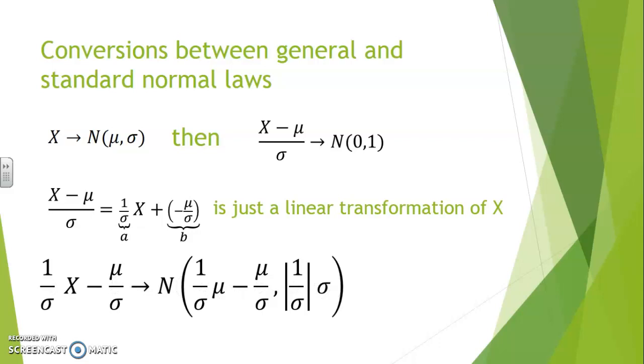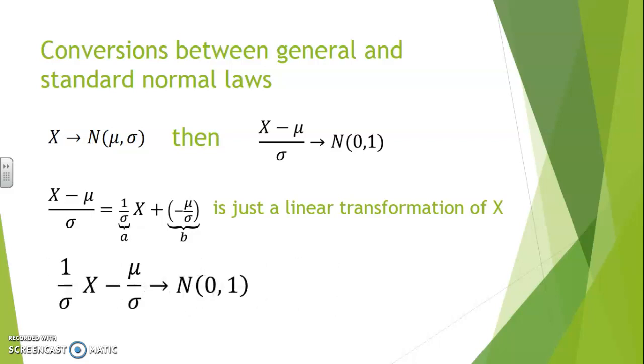Notice how the first parameter becomes 0 because of the canceling terms, and the second parameter becomes 1 because of the canceling sigmas, which are always positive. In other words, we are getting a standard normal law out of this.